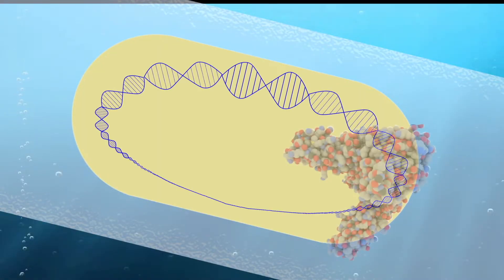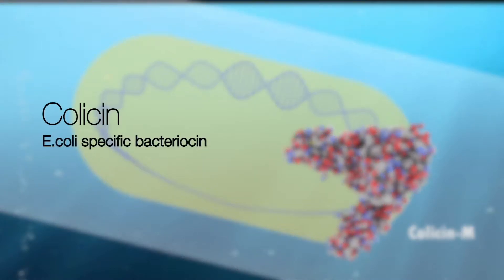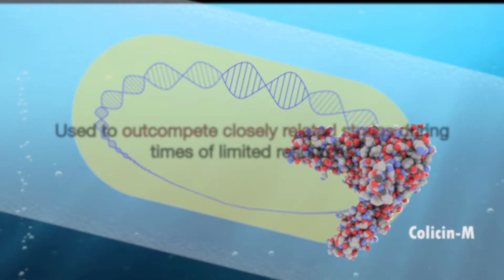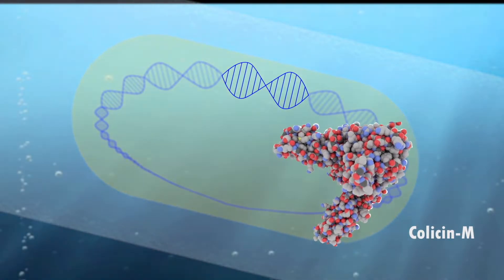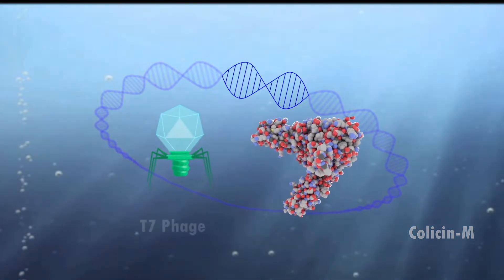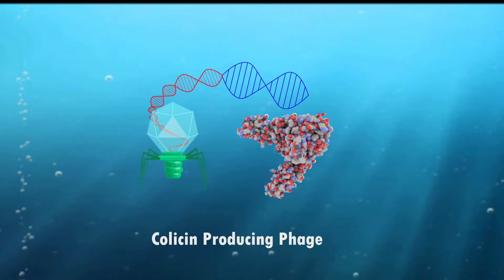In our case, what we've done is we've taken a Colicin gene from E. coli. A Colicin is a type of bacteriocin, or microbial toxin, that is produced by and targets some strains of E. coli. And we've inserted the Colicin gene into the DNA of a lytic phage known as T7, resulting in a genetically engineered phage that co-expresses a Colicin.